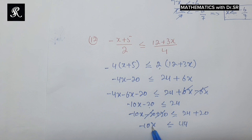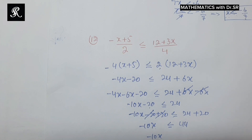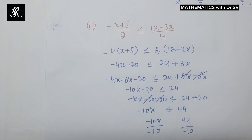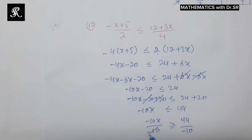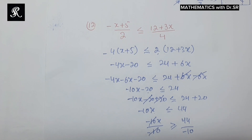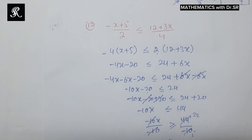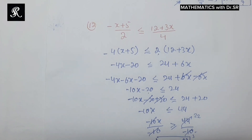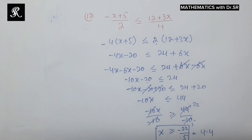We need to simplify for variable x, so we divide throughout the inequality by negative 10. When we divide an inequality by a negative number, the inequality sign reverses. We now have x is greater than or equal to negative 44 over 10, which simplifies to negative 22 over 5. Dividing, that equals negative 4.4. So x is greater than or equal to negative 4.4.